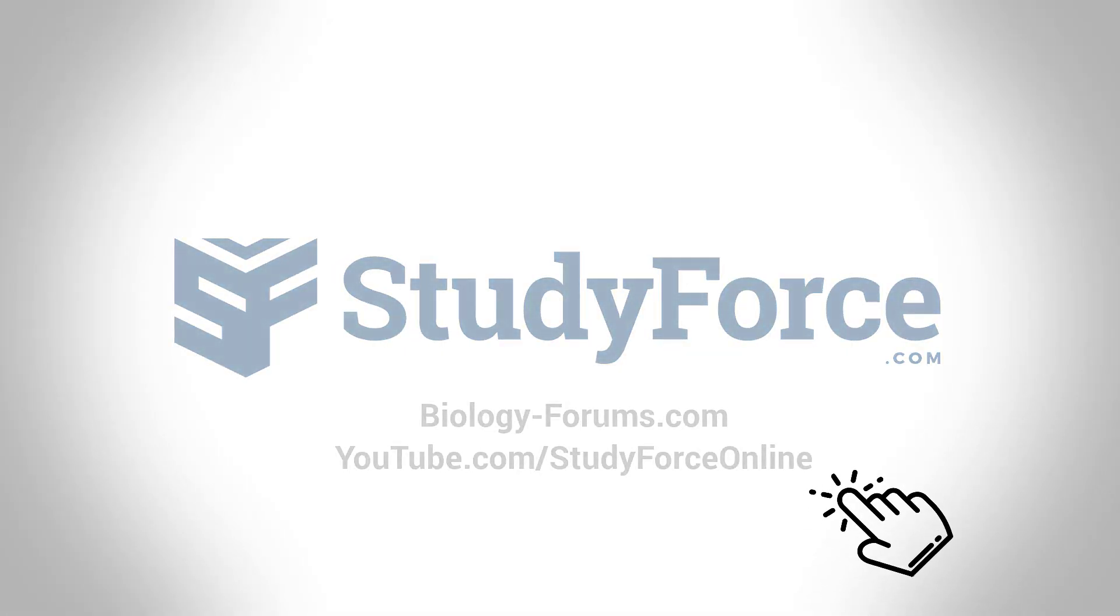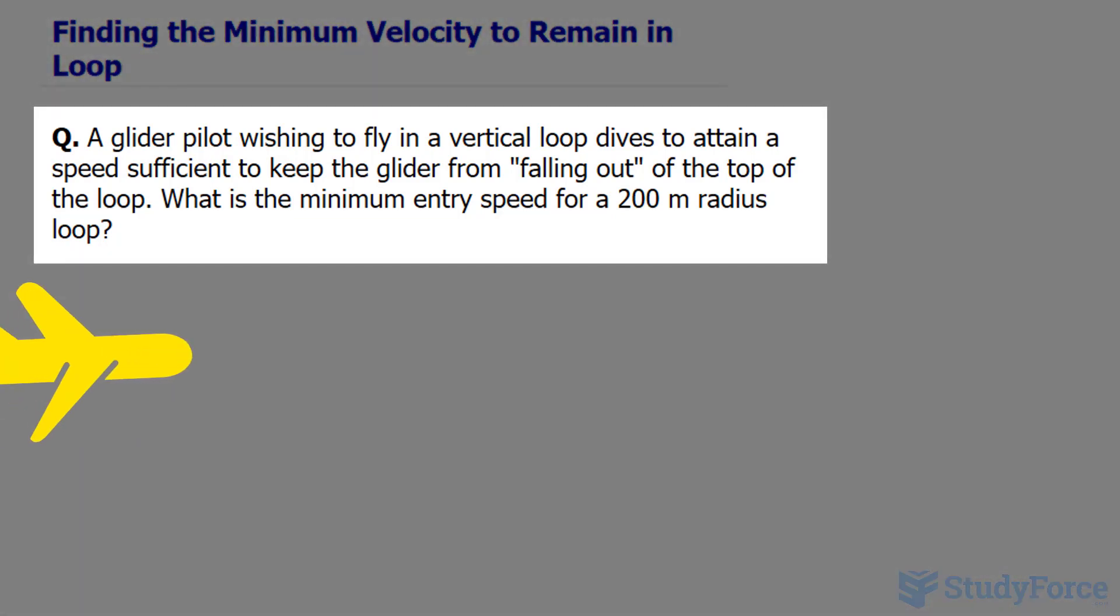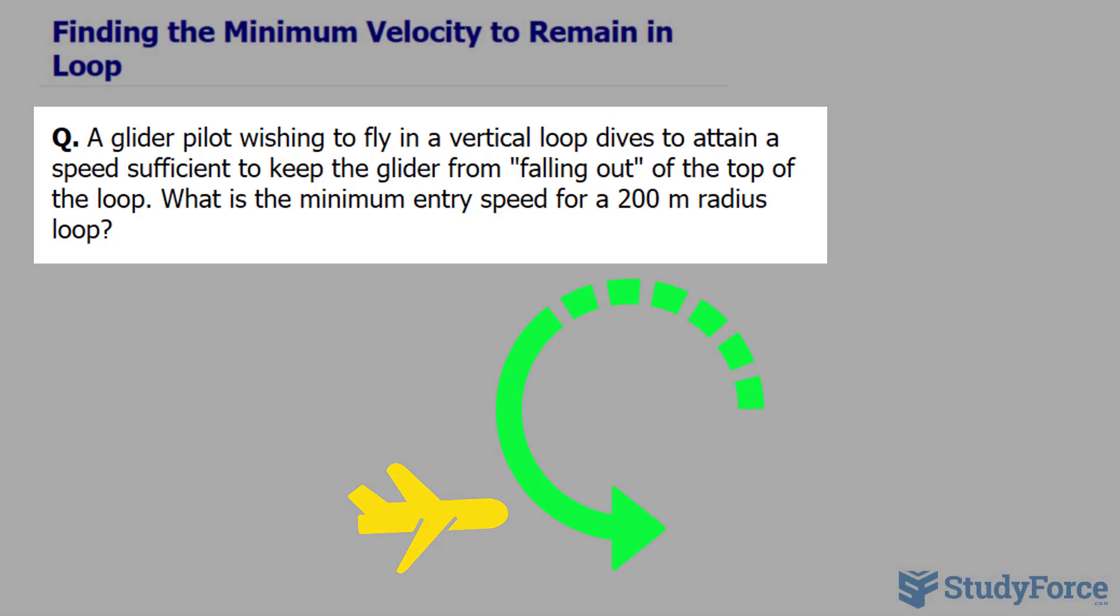In this lesson, we'll look at an example on how to find the minimum velocity to remain in loop. This is a centripetal force energy type problem. The question reads, a glider pilot wishing to fly in a vertical loop dives to attain a speed sufficient to keep the glider from falling out of the top of the loop. What is the minimum entry speed for a 200 meter radius loop?